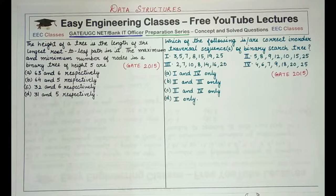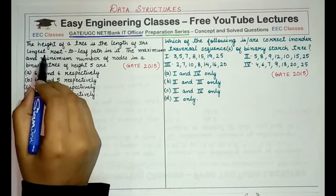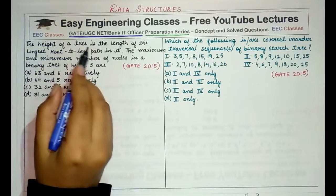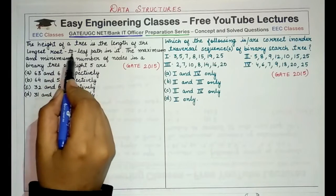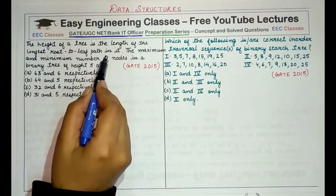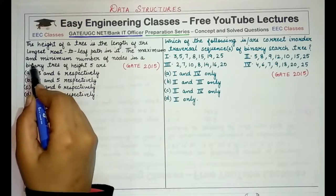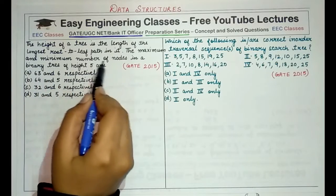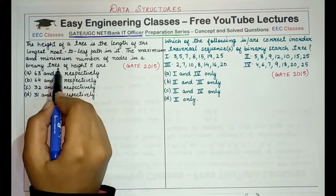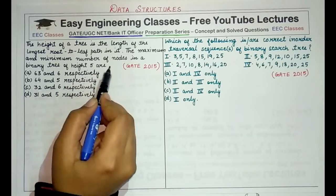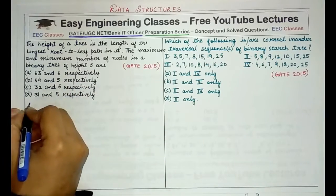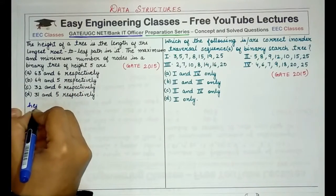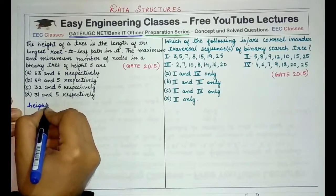Starting with the first question of our lecture today. The question says that the height of a tree is the length of the longest root to leaf path in it. The maximum and the minimum number of nodes in a binary tree of height 5 are. So first of all, height of 5 means a level of 6.